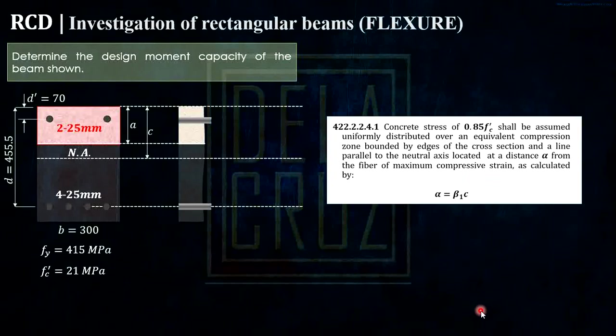But sinabi sa code it will be assumed that the effective compression block is at a parallel line distance. And that is from the extreme compression strain from here, extreme compression strain. And that is a distance A from that point. And that A is just beta 1C. I showed this from my previous video. So I hope you watch that.